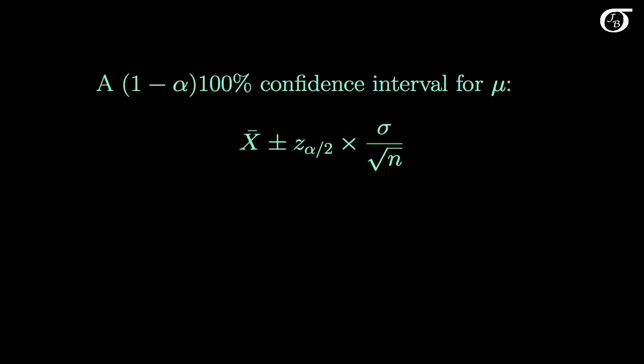Under those assumptions here's the appropriate confidence interval formula. This quantity here is the margin of error of the confidence interval. The quantity sigma over the square root of n is sometimes called sigma x-bar, and it is the standard deviation of the sampling distribution of x-bar.